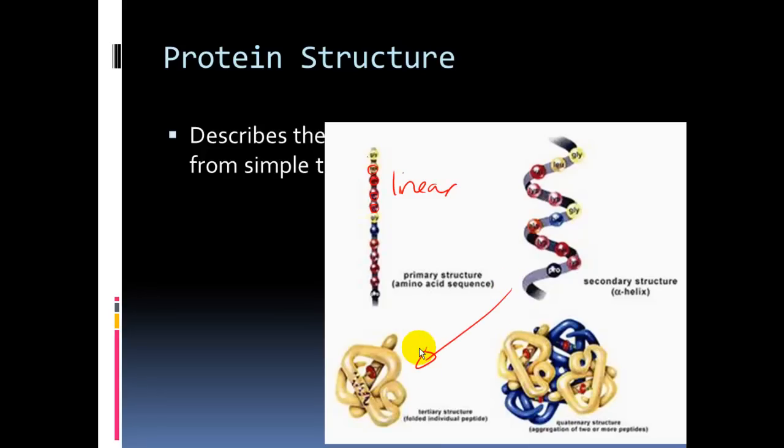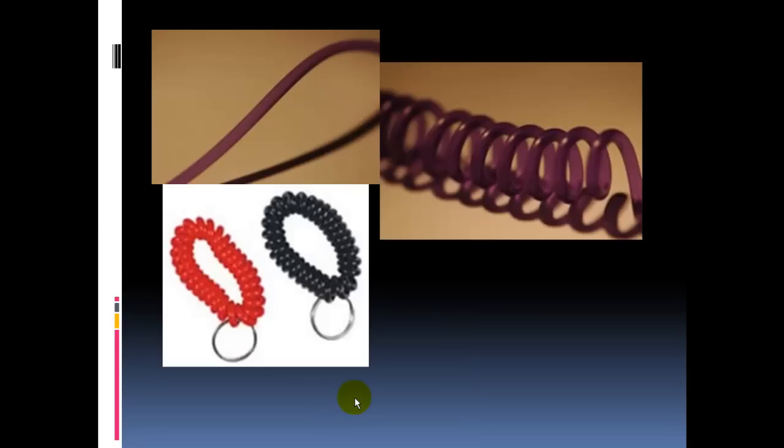The alpha helix bends over on itself. The final structure determines the molecule's conformation and function—its 3D shape. If two tertiary structures bond together, we have quaternary structure. Here we see blue and yellow—two different polypeptides with tertiary structure bonded together. Hemoglobin is an example of quaternary structure.